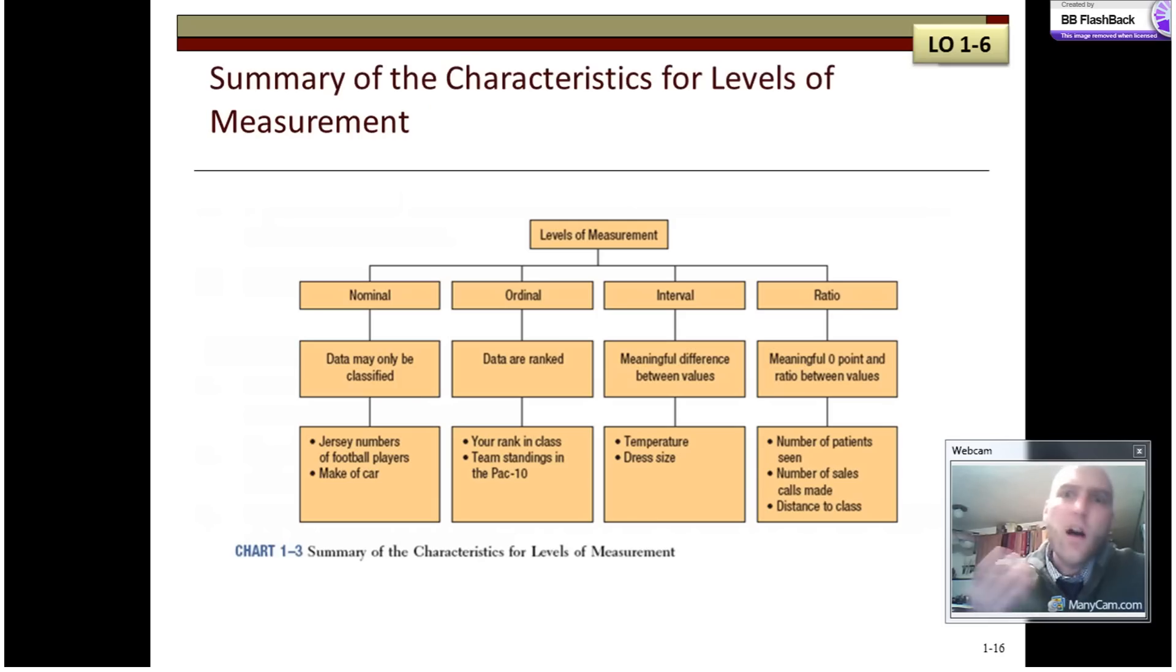In conclusion, the four levels of measurement, nominal, ordinal, interval, and ratio, have a series of defining characteristics that you can see below. We've gone through all of them, and here's a few more examples of things that fall into nominal, ordinal, interval, and ratio level measurements.